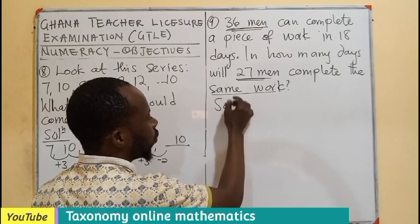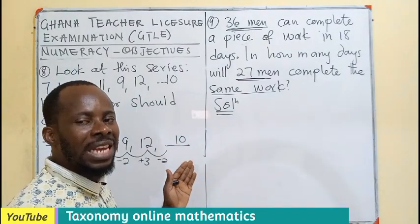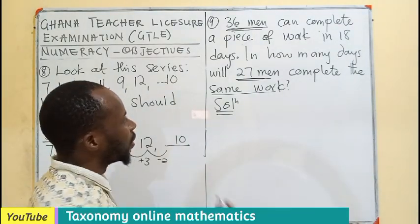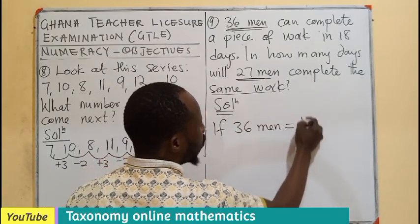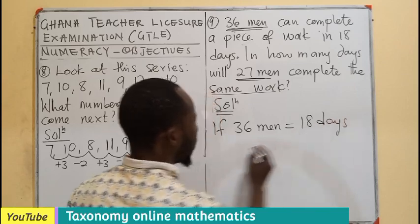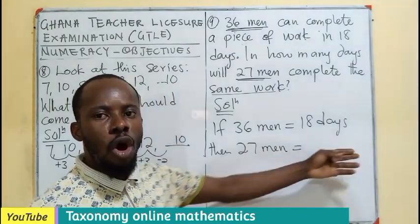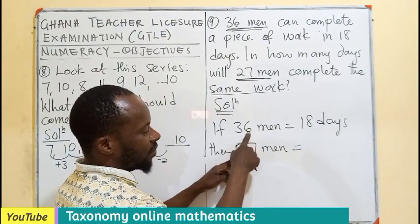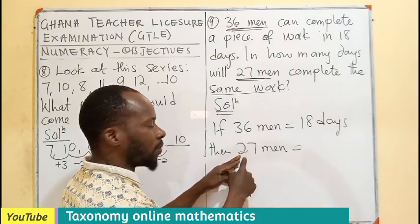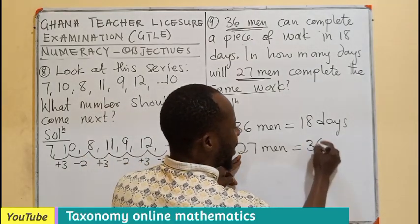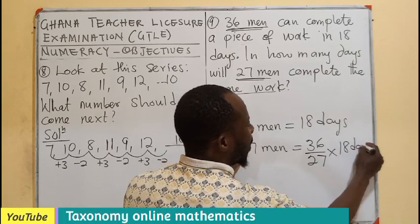We do ratio as indirect work proportion. That is, as one quantity increases, the other work decreases. So if 36 men can be able to work in 18 days, then we expect 27 men to be able to use more days. So if more, less divide. Comparing the men together, which value is the last one? Which is 27. Therefore, 36 men over 27 men times 18 days.